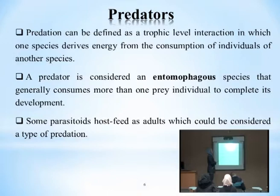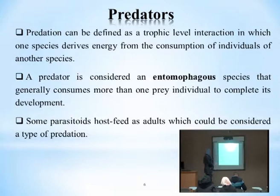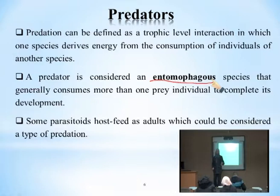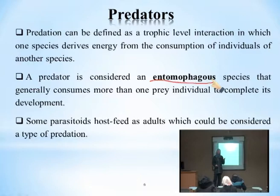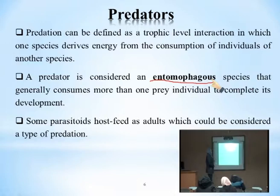We obtain energy by eating other living organisms. A predator is considered an entomophagous species that generally consumes more than one prey individual to complete its development. To complete its life cycle it needs to eat more than one insect — it is not monophagous. Some parasitoids that feed as adults could be considered a type of predation.